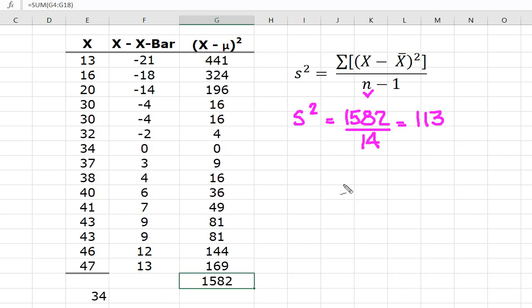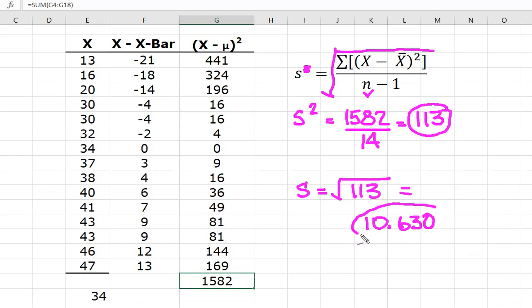I promised you a free standard deviation. And so, we know that if we take off this square and make it s, the standard deviation, all I need to do is take the square root of the variance. So, if s squared is equal to 113, then s is equal to the square root of 113. And according to my $5 calculator, the square root of 113 is 10.630. And so, now I know that the variance of my sample is 113. The standard deviation is 10.630.